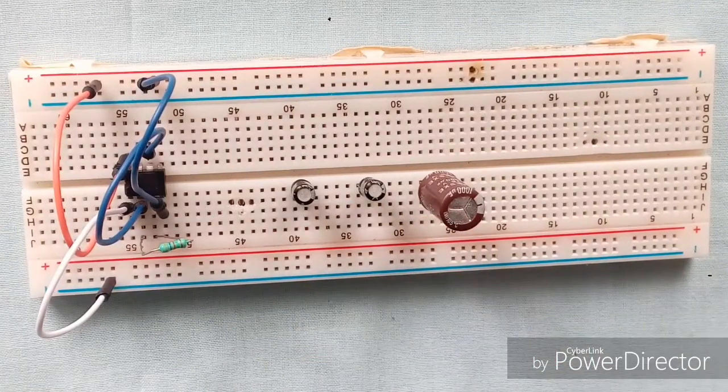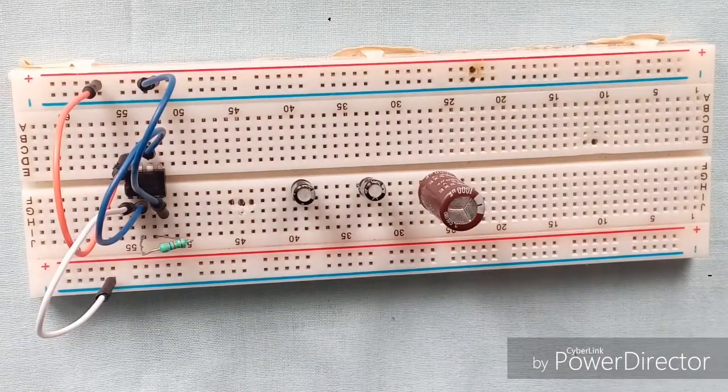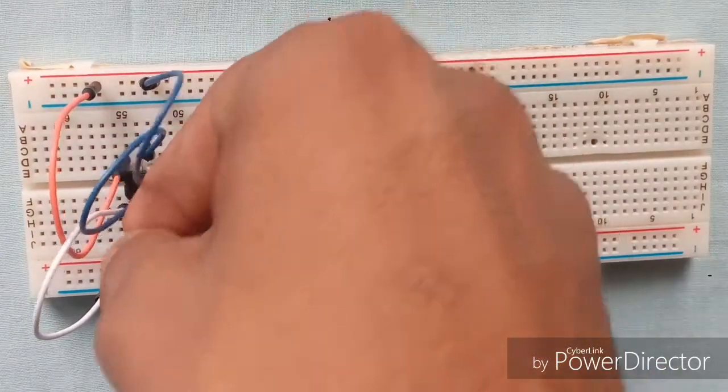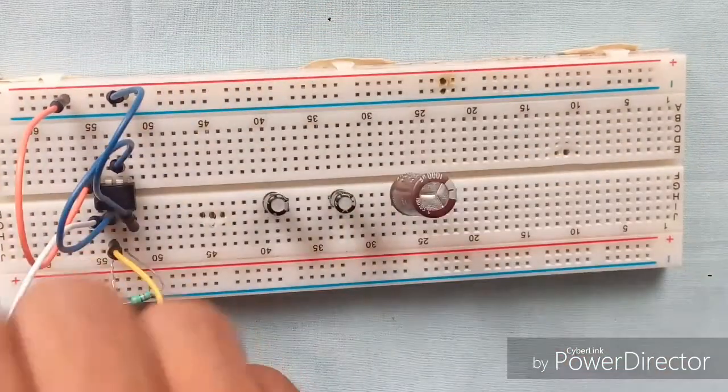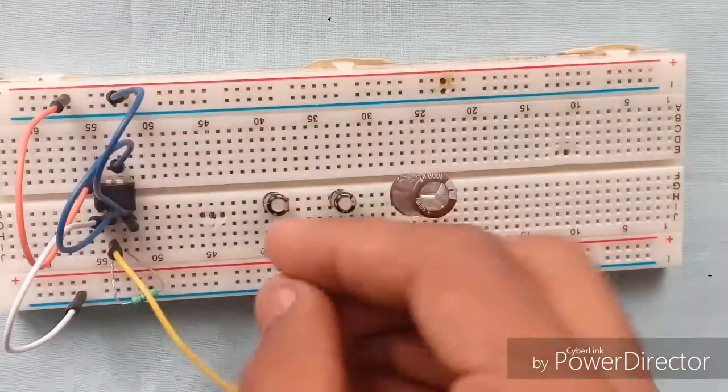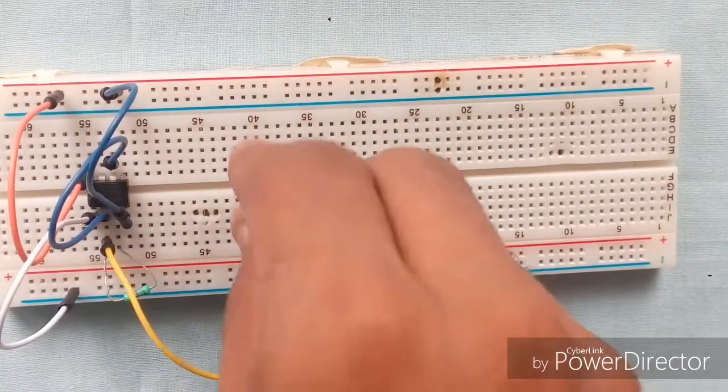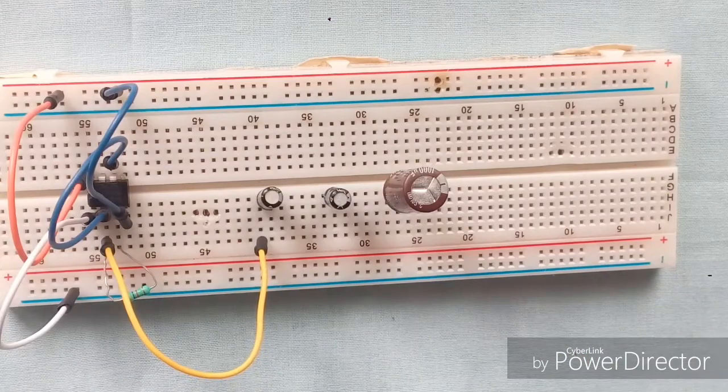Now connect pin 2 of the IC to the positive side of the capacitor, and then connect the negative side of the capacitor to the negative side of the breadboard.